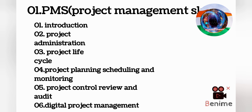Project management skills has a total of six chapters. First chapter is introduction to project management. Second chapter is project administration. Third chapter is project life cycle. Fourth chapter is project planning, scheduling and monitoring. Fifth chapter is project control, review and audit. Sixth chapter is digital project management.